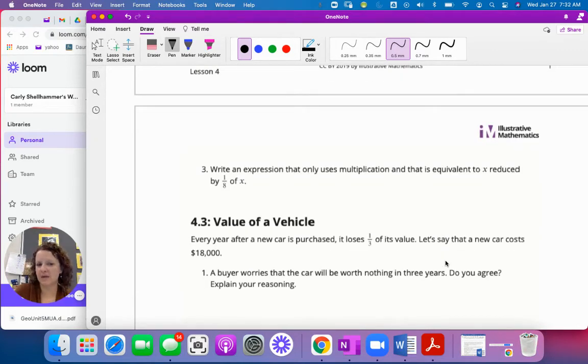Okay. Now write an expression that only uses multiplication and that is equivalent to X reduced by one eighth of X. So that's just like, I'm spending an eighth of whatever. Okay. Of X. So what's remaining is the part of a whole one minus one eighth is seven eighths. That's how much is remaining. So I would do X times seven eighths or seven eighths times X. It doesn't matter. Okay. This right, this will give us what remains. Okay. Okay.